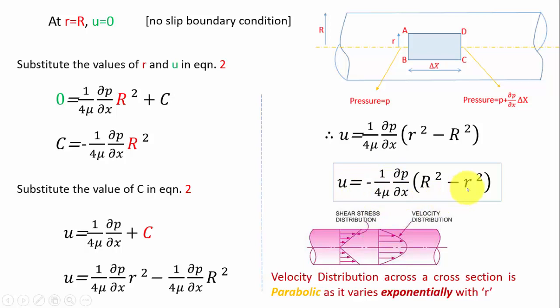The velocity distribution across the cross section is parabolic, since it varies with r². In contrast, the shear stress distribution is linear with respect to radius r, because τ depended on r to the first power, whereas u depends on r squared.